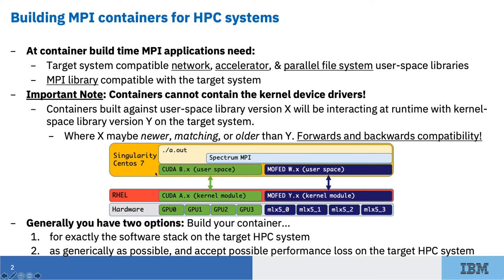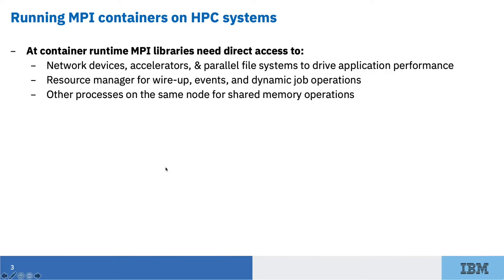When it comes to running MPI in containers, there are three big areas of discussion. First, at runtime, the MPI libraries need direct access to the network devices, accelerators, and parallel file systems to drive application performance. These are the aspects of the HPC system that the user came to leverage, so MPI needs unimpeded access to deliver the performance the user expects.